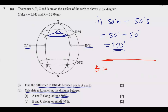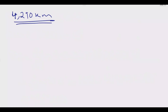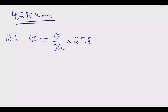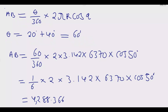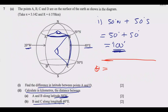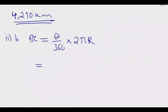Then we go to BC. BC is along the great circle, so the formula changes. We connect to the center and find this angle — but we already know it from Roman numeral 1, which was 100 degrees. The distance BC equals theta over 360 multiplied by 2 pi r. So it is 100 over 360 times 2 times 3.142 times 6370.